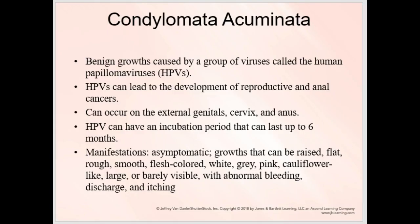Moving into HPV, or human papillomaviruses. Condylomata acuminata is the manifestation of the virus, and it will show up as little growths with a cauliflower-like appearance. They'll generally manifest around the genitals, the cervix, the anus. You can also get them in the mouth. They may be raised or flat, whitish-pink, cauliflower-like, large, or barely visible. Some people get them so small they don't realize they're infected with HPV. Symptoms include abnormal bleeding and discharge.